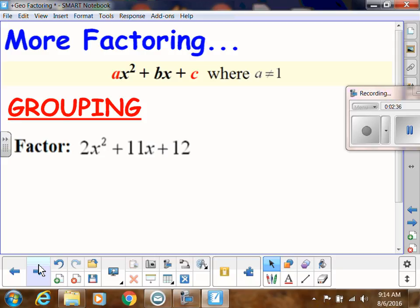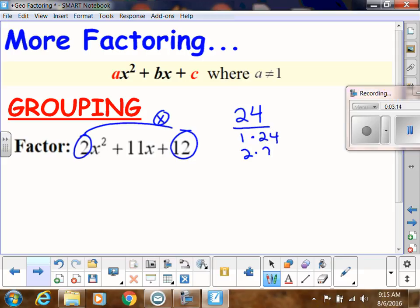So when I say factor by grouping, this is the method. What we're going to do is multiply, instead of treating the a term and the c term separately, we're going to multiply. So 2 times 12 is 24. Now I'm going to treat this kind of like the basic easy ones where a was equal to 1. What are my factors of 24? I've got 1 times 24, 2 times 12, 3 times 8, 4 times 6. Now I'm going to look at my middle term and say which one of those add up to be 11x. That would be this one right here.